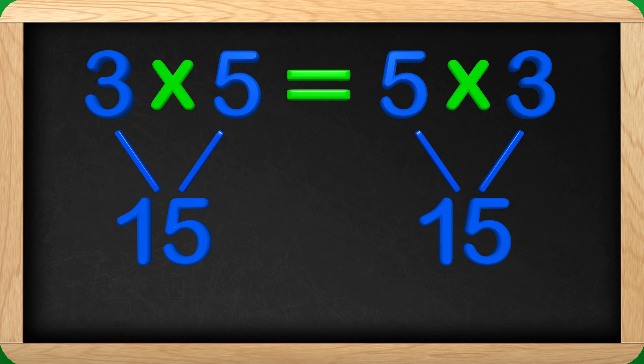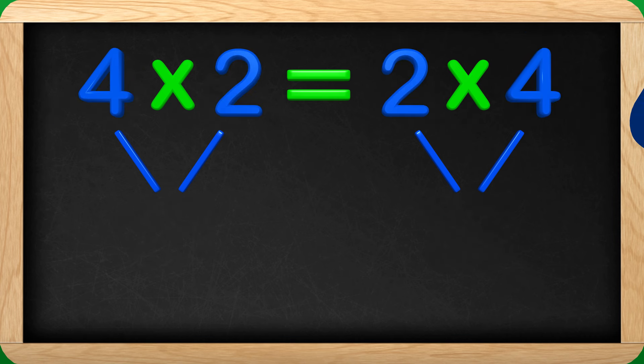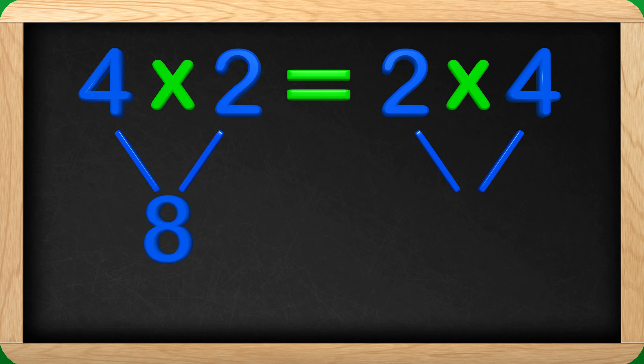I want to try one more that my friend showed me with an array. Here is the equation and let's do the multiplication starting on the left side. 4 multiplied by 2 is what? 8! Great! Now on to the other side. What is 2 multiplied by 4? It is also 8! So the order of the numbers does not matter in multiplication.